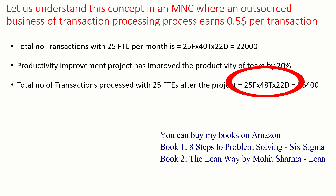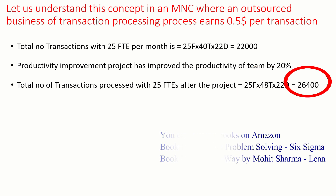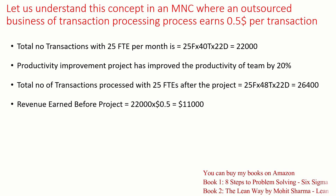25 full-time employees multiplied by the 20 percent productivity increase means now 48 transactions per day, multiplied by 22 days, gives us 26,400 transactions with the same number of full-time employees. Total revenue earned before the project was 22,000 multiplied by $0.50, which equals $11,000 per month. Revenue earned after the project is 26,400 multiplied by $0.50, giving us $13,200.